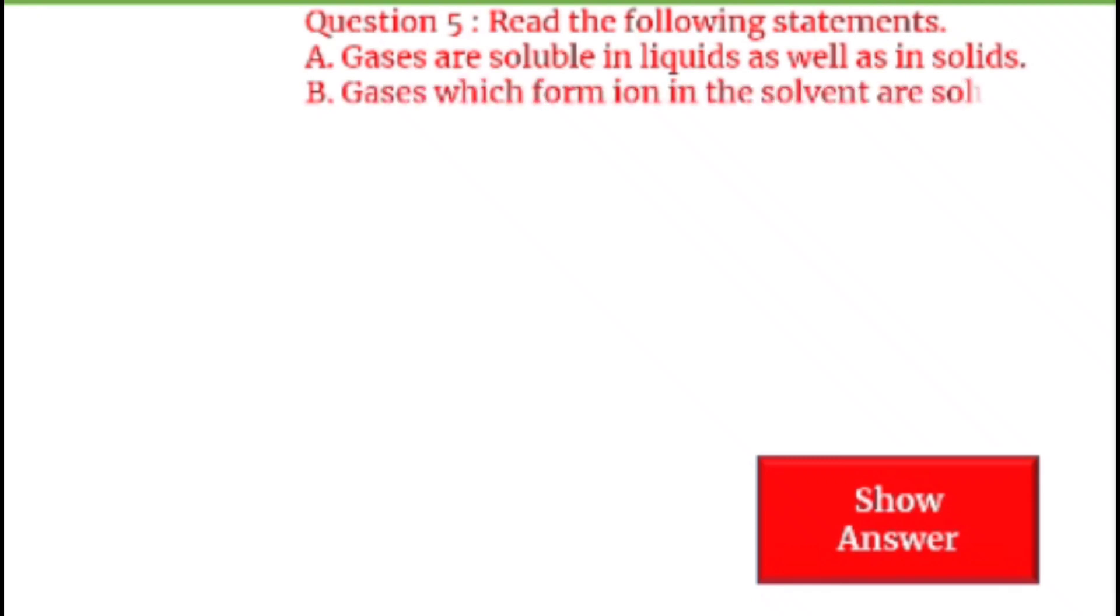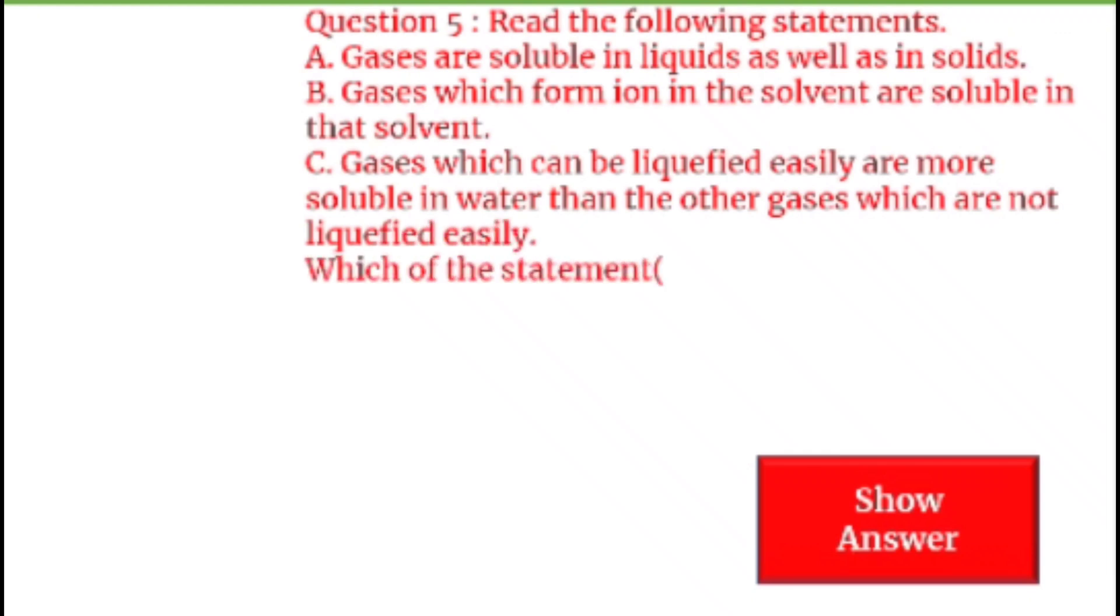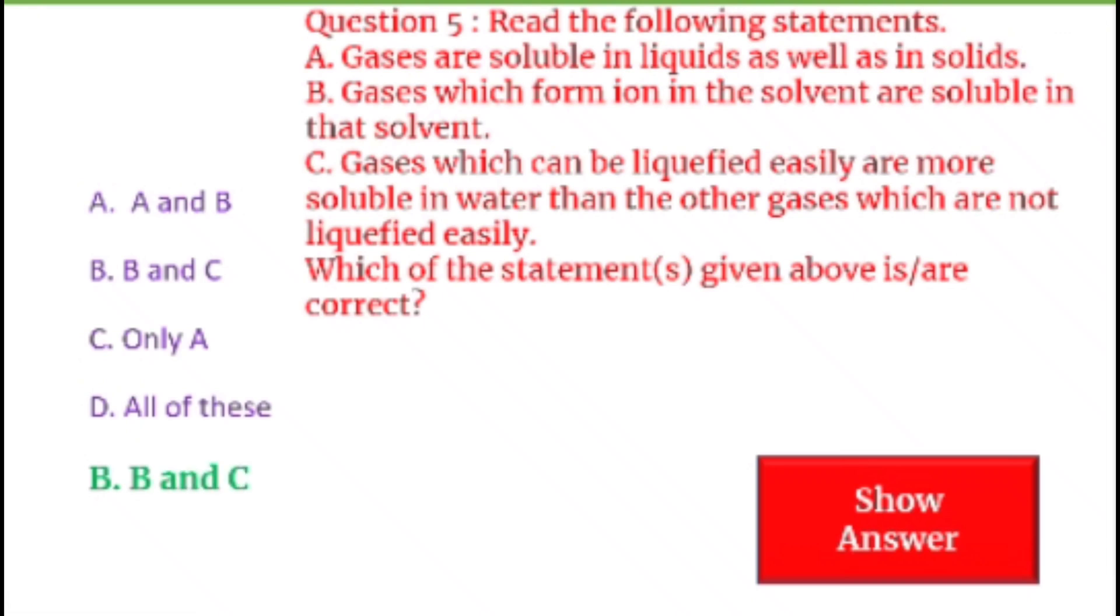Next question on your screen, question 5. Read the following statements. A: Gases are soluble in liquids as well as in solids. B: Gases which form ions in the solvent are soluble in that solvent. C: Gases which can be liquefied easily are more soluble in water than the other gases which are not liquefied easily. Which of the statements given above is or are correct? First option we have: A and B. B: B and C. C: Only A. D: All of these. So what will be the answer? Let's see. B and C is the correct statement.